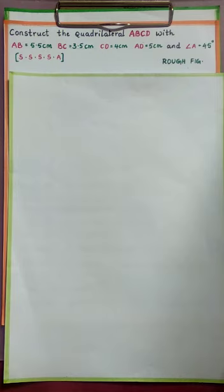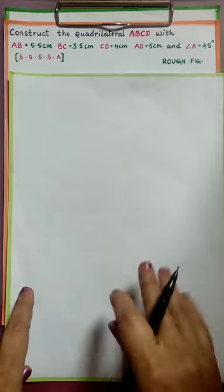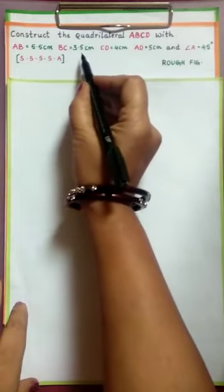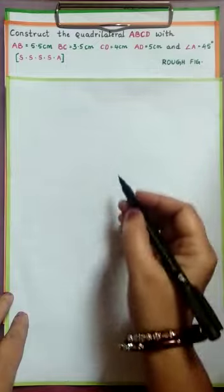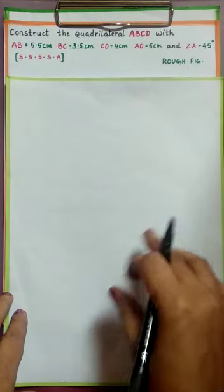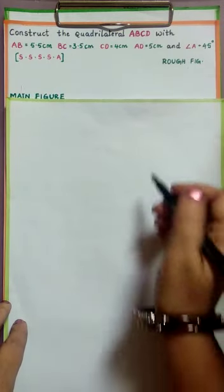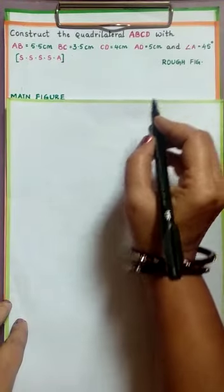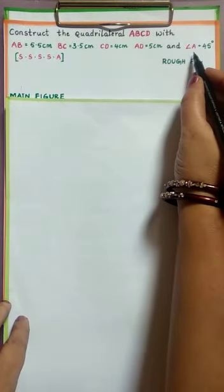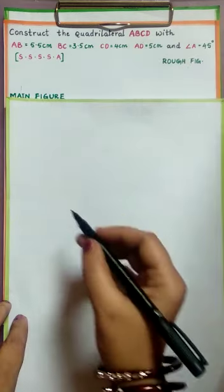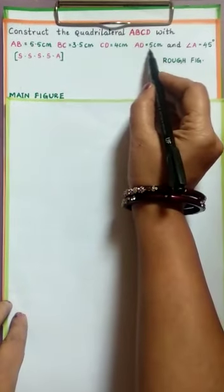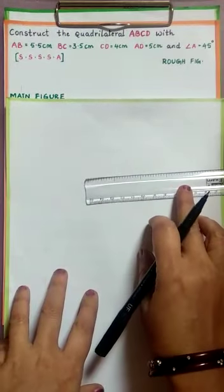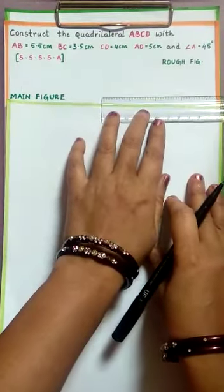Now see the data: AB = 5.5 cm, BC = 3.5 cm, CD = 4 cm, AD = 5 cm, and angle A = 45 degrees. Before drawing the rough sketch, we have to take the base which includes the given angle — this is the most important rule. The given angle is at A, so we take a base that includes A: we have AB = 5.5 cm and AD = 5 cm, so either can be taken as the base. For the rough sketch, exactness is not needed — it is just for an idea.